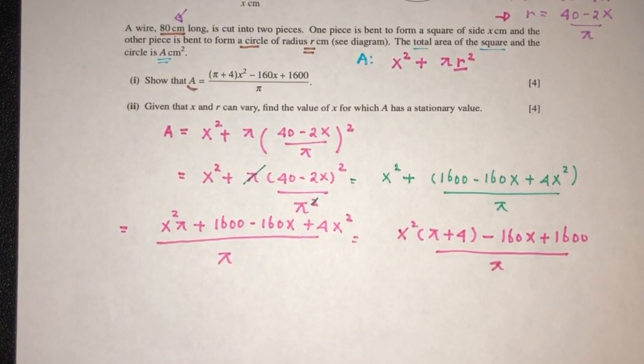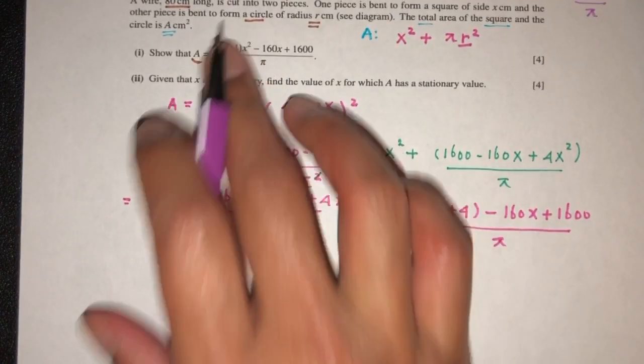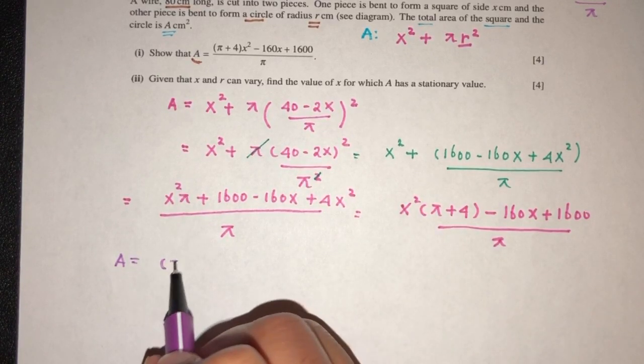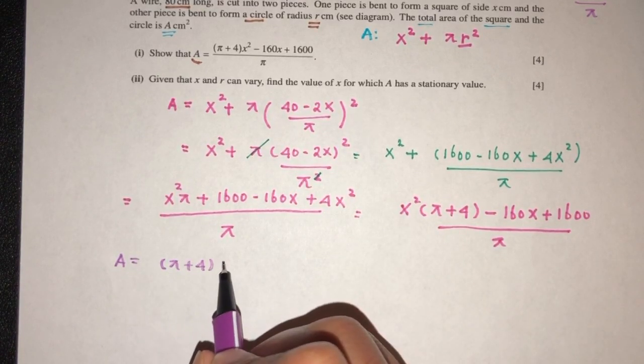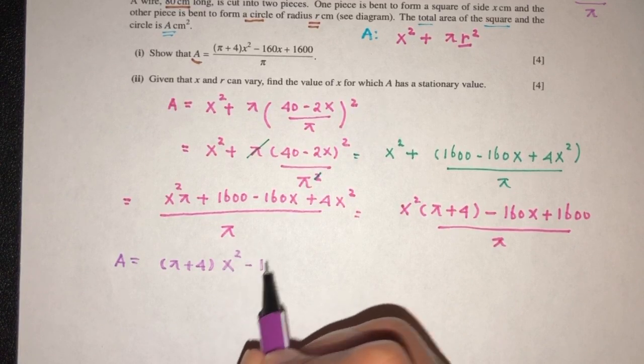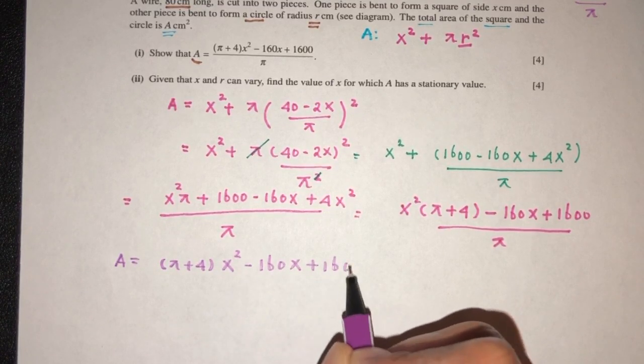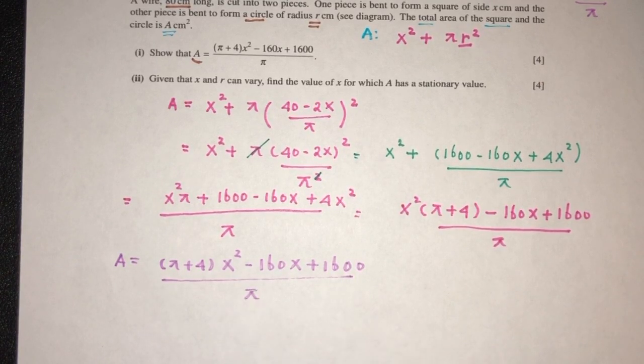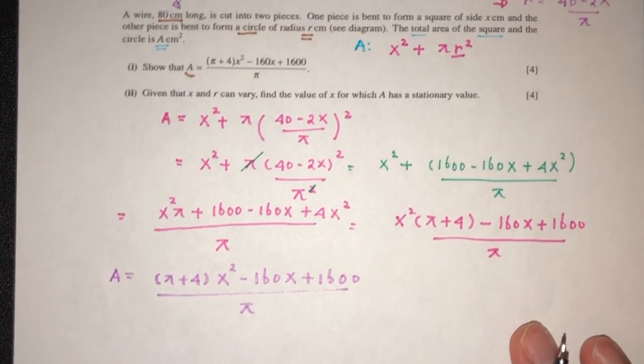Now we can just rearrange to show it is exactly the way we want to show this. So A can be (π+4)x² minus 160x plus this value over the value of π. That is your area.